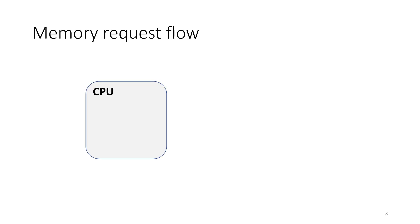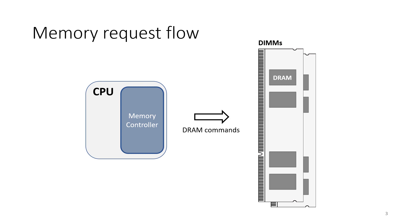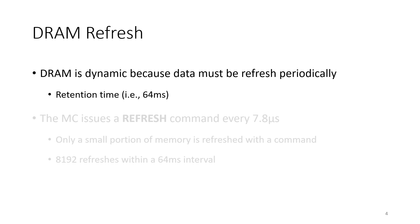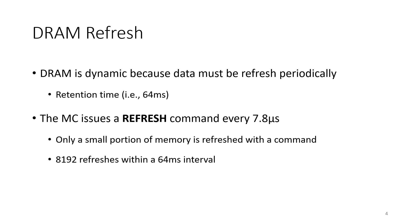The current slide shows a CPU. Integrated with the CPU we can find the memory controller. When the CPU needs to access memory, the memory controller issues specific DRAM commands to the memory modules. The memory controller must ensure that DRAM commands respect timing constraints defined in the memory specifications. DRAM is a synchronous technology, but it is also dynamic, meaning that data must be refreshed periodically. Each bit of information must be refreshed every 64 milliseconds — we call this interval retention time. The memory controller issues a refresh command every 7.8 microseconds, and each refresh command refreshes only a small portion of the memory.